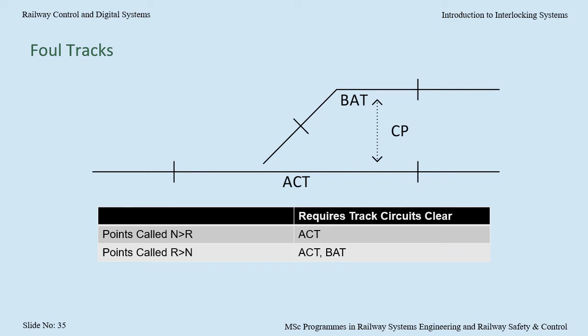Where we can, we have the deadlocking track extend at least as far as the clearance point. However, sometimes this is not reasonably practicable — for instance, there may be another set of points which needs its own track circuit. The risk is that there is a train on the foul track and a train going along the other leg of the points could side-swipe it. We allow the points to swing towards the train that is foul so another train could couple up to it, but we don't allow the points to swing to the position that would allow a sideswipe. In our case, we prevent the point from going normal if the foul track — the A track — is occupied.